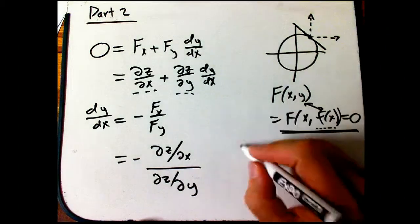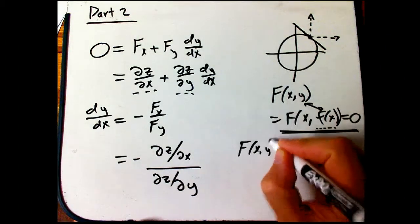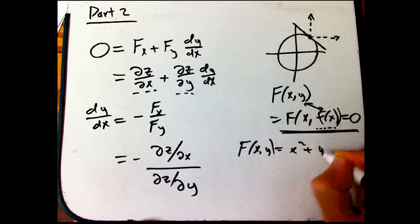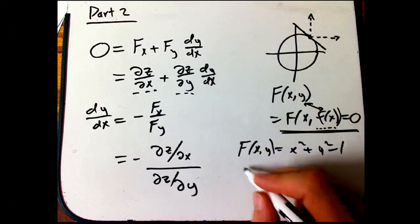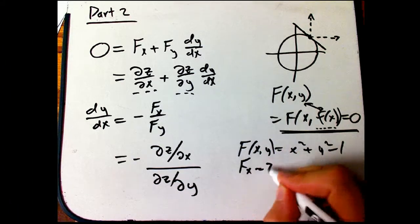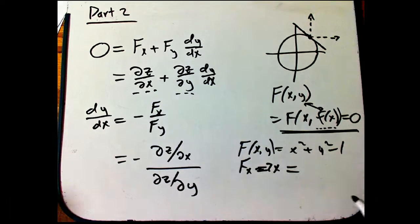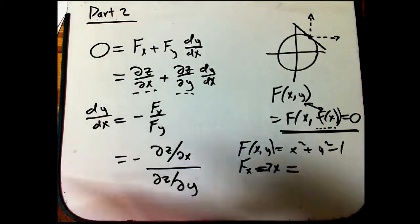So for example, if big F of xy is x squared plus y squared minus 1, then big Fx is 2x. And at the point in question, I think I used 3/5, 4/5.